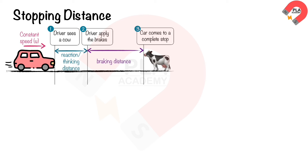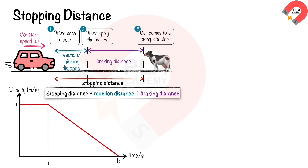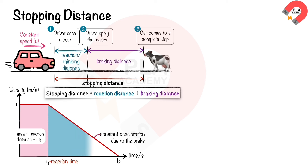The distance travelled by the car from the moment the brakes are applied until it comes to a complete stop is called the braking distance. The total stopping distance is the sum of the reaction distance and the braking distance. On a velocity-time graph: time T1 represents the driver's reaction time; the area under the graph during T1 is the reaction (thinking) distance = uT1; the area under the graph for the braking section is the braking distance = ½u(T2 − T1). Therefore, stopping distance = uT1 + ½u(T2 − T1).